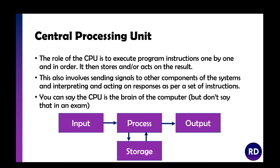The role of the CPU is to execute program instructions one by one and in order. It then stores or acts on the results. This also involves sending signals to other components of the system and interpreting and acting on responses as per a set of instructions. The CPU is like the brain — just like your brain sends signals to your arms and legs, that's what the CPU does.